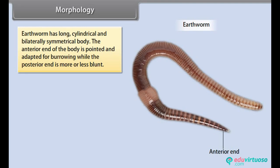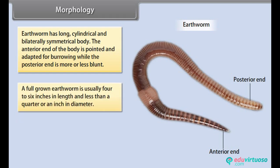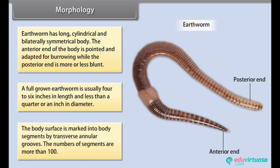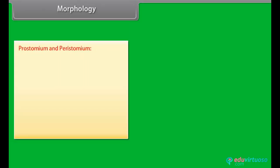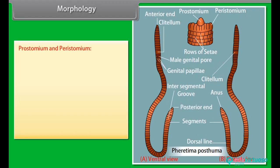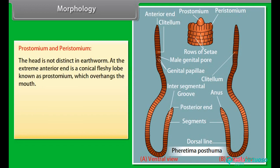A full-grown earthworm is usually 4 to 6 inches in length and less than a quarter of an inch in diameter. The body surface is marked into body segments by transverse annular grooves. The number of segments are more than 100. The head is not distinct in earthworm. At the extreme anterior end is a conical fleshy lobe known as prostomium, which overhangs the mouth.